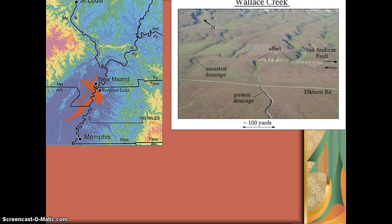This is a picture of the San Andreas Fault showing that side-to-side motion. One of the things that we use to support that it has moved side to side is that rivers and streams are diverted.